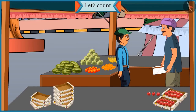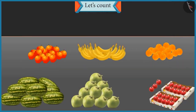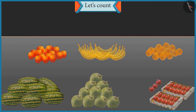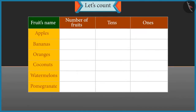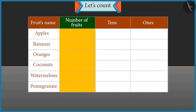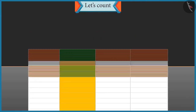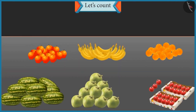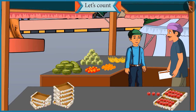Chotu, look. Different varieties of fruit are kept here. You have to count the fruits and tell their number. You also have to tell how many groups of ten are there in each, so that we can count them easily.